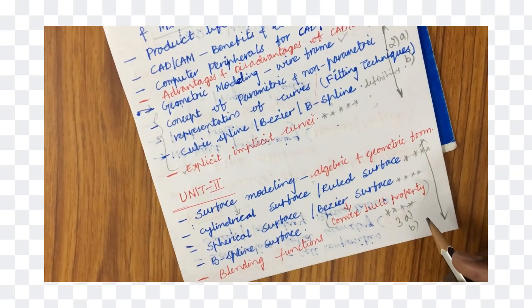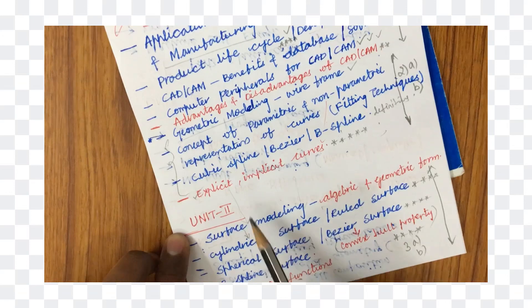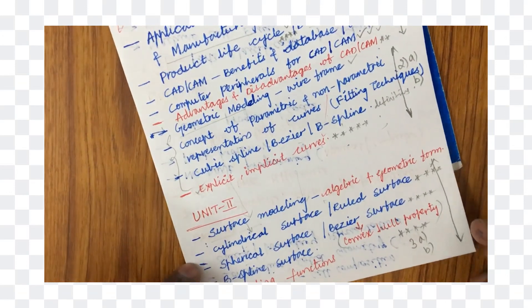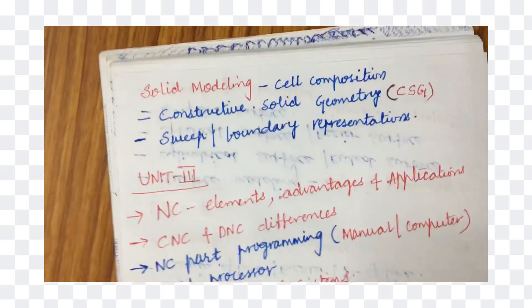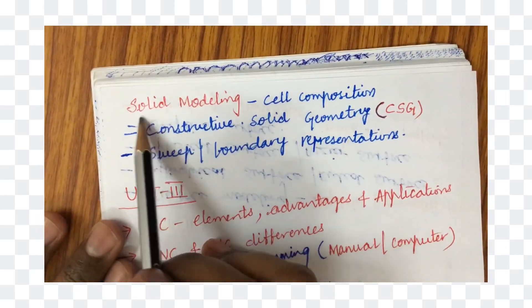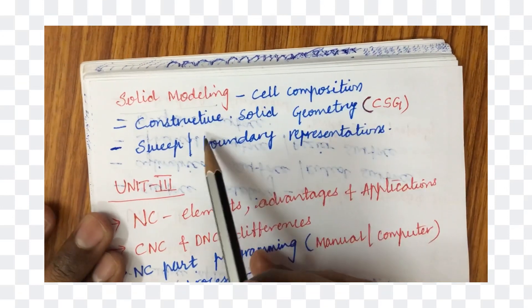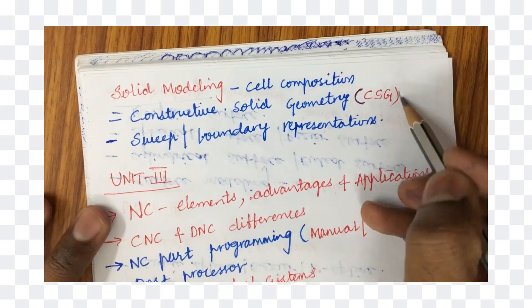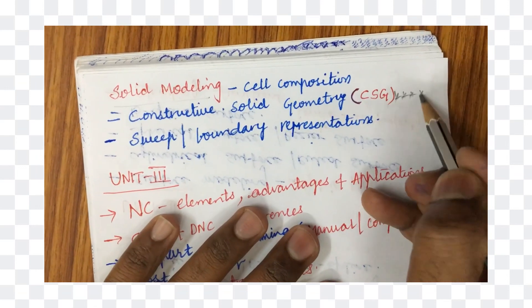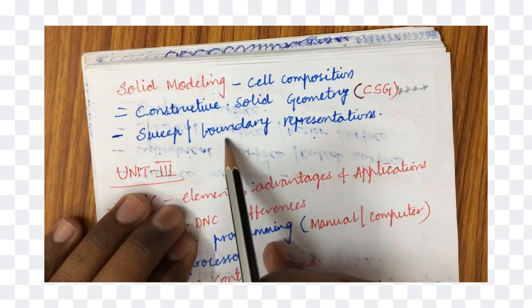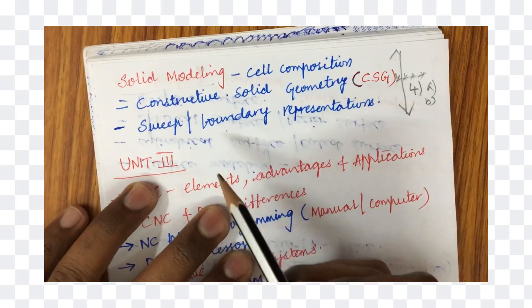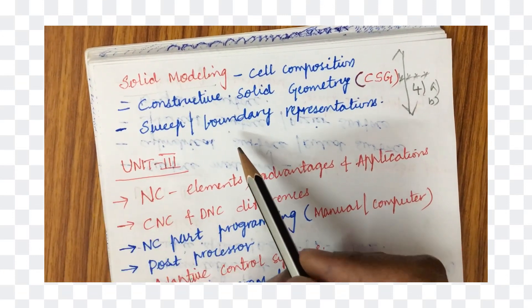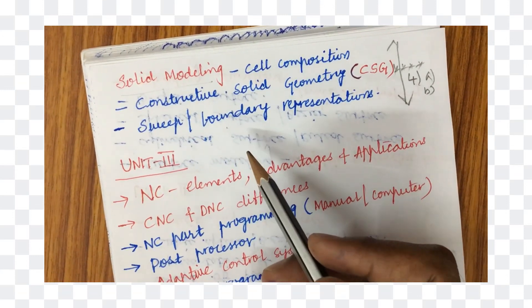Without geometric modeling knowledge, a student working on surface modeling cannot understand the topic. This syllabus is in a chain structure where you are supposed to work out accordingly. The second unit also consists of solid modeling — concepts of cell decomposition as well as constructive solid geometry, which is a very important gunshot question. Sweep and boundary representation are expected as question 4A and 4B. Please focus on the first two units without skipping any concept.